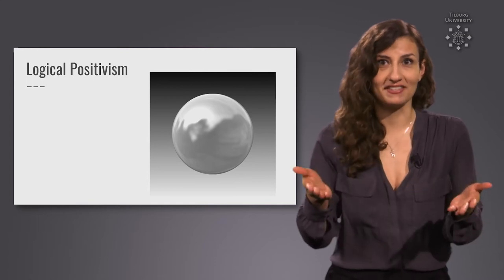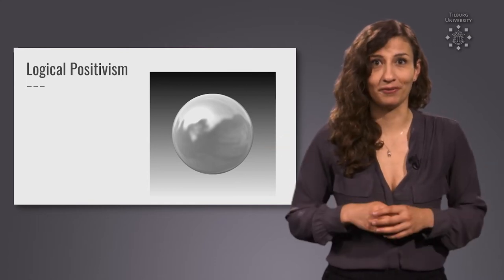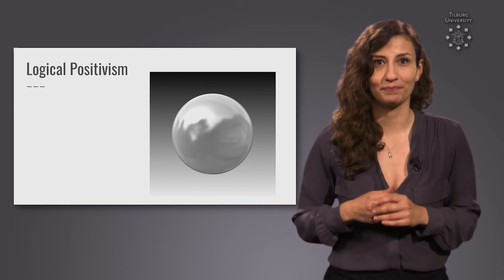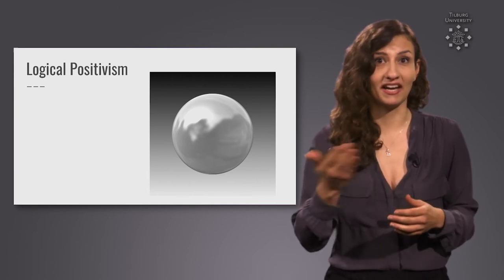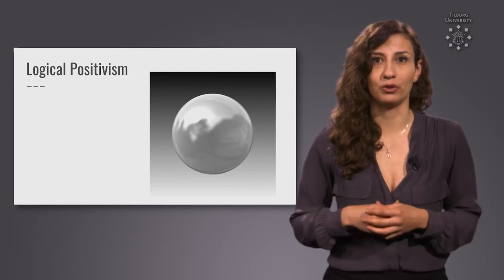If it didn't have these attributes, it wouldn't be a sphere, according to our definition. Logical positivism aimed to find these kinds of verifiable, true statements about the world.